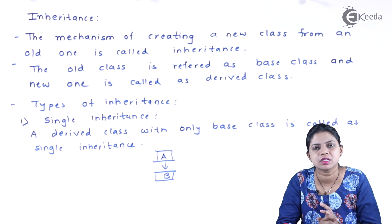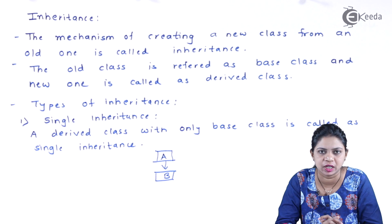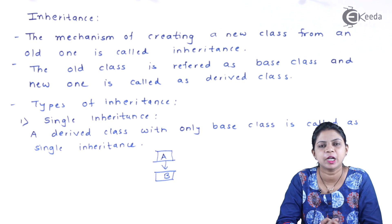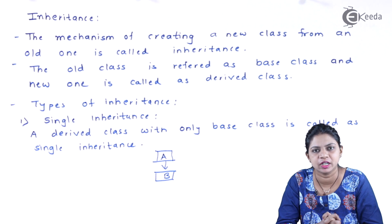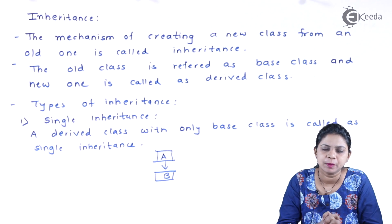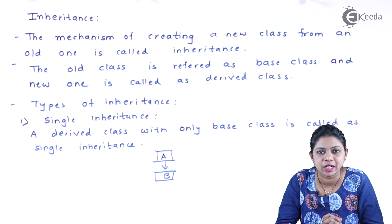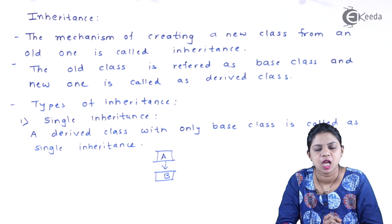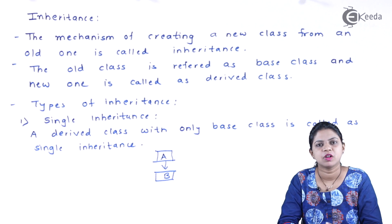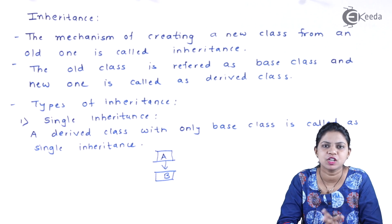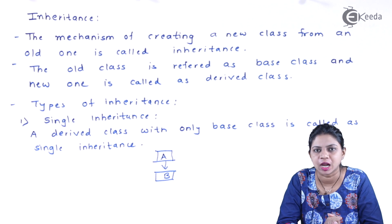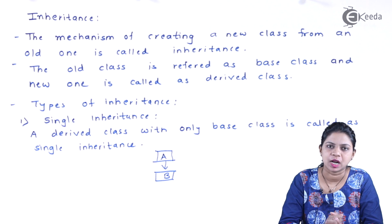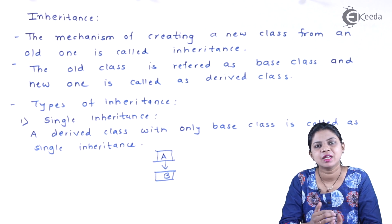When it comes to inheritance, there are various types: single inheritance, multiple inheritance, multi-level inheritance, hierarchical inheritance, and hybrid inheritance. We will study each type in detail with examples. But first, let us summarize the definition of inheritance. Inheritance is a mechanism of creating a new class based on an old class.